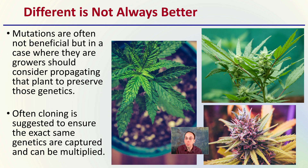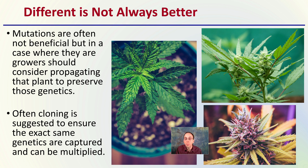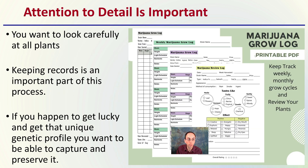Different is not always better, though. Just because you're growing a thousand plants and one of them is different, mutations are often not beneficial. But in cases where they are, growers should consider propagating that plant to preserve those genetics. Cloning is often suggested to ensure the exact same genetics are copied and multiplied. Mutations are typically not a good thing, but in certain cases they can be, and you want to make sure you have methods of recognizing and then preserving those genetics.